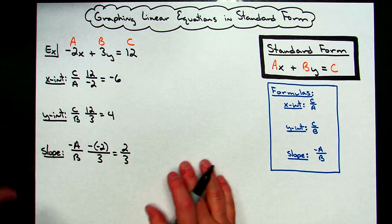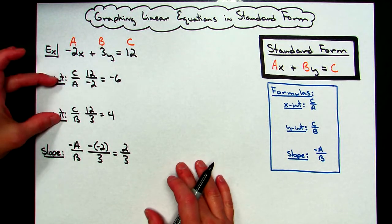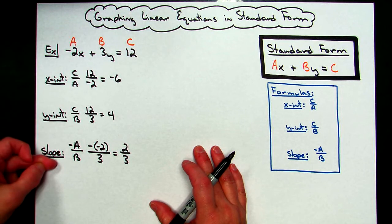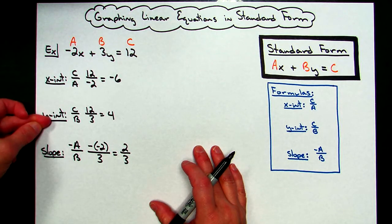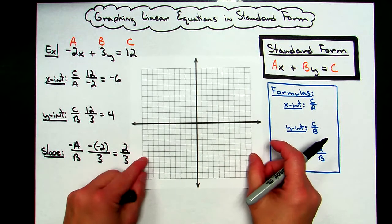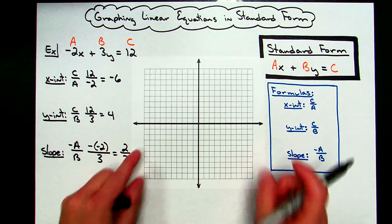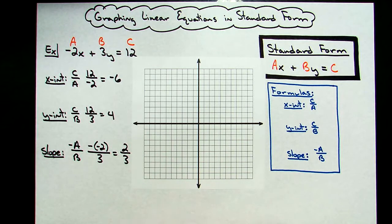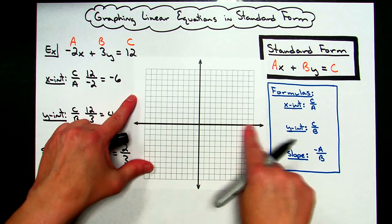I could choose to just put these two points on the graph. I could choose to put the X-intercept on and then run the slope. I could choose to put the Y-intercept on and then run the slope. Either way is going to work. Let's put a little piece of graph paper down here. I think since my X and Y-intercepts are whole numbers, that's what I'm going to do. I'm going to put an X-intercept at negative 6, so I'm going to go to the X-axis.